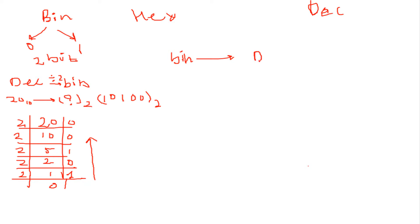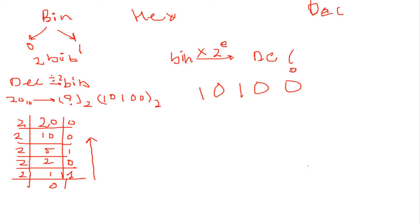Now we'll see the reverse conversion, that is binary to decimal. While converting binary to decimal, we have to multiply each digit by its equivalent positional weight — that is 2 raised to the position. Say this is my number 10100. The position of the rightmost digit is 0, then 1st, 2nd, 3rd, and 4th.